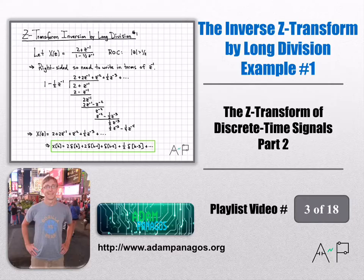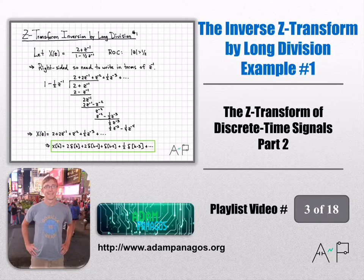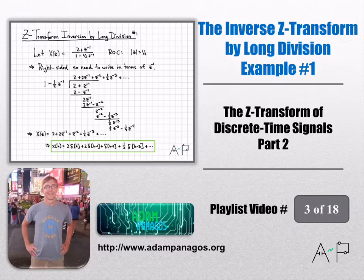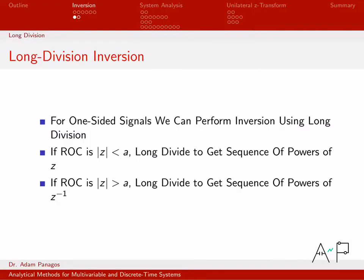Partial fraction expansion is one way to do inverse Z transforms, and I kind of like that way the best because when you're done you get an expression for the signal that is good for all time. Another way that you can do inverse Z transforms is by what I call long division. So let's do a few examples of using long division to get out an inverse Z transform.